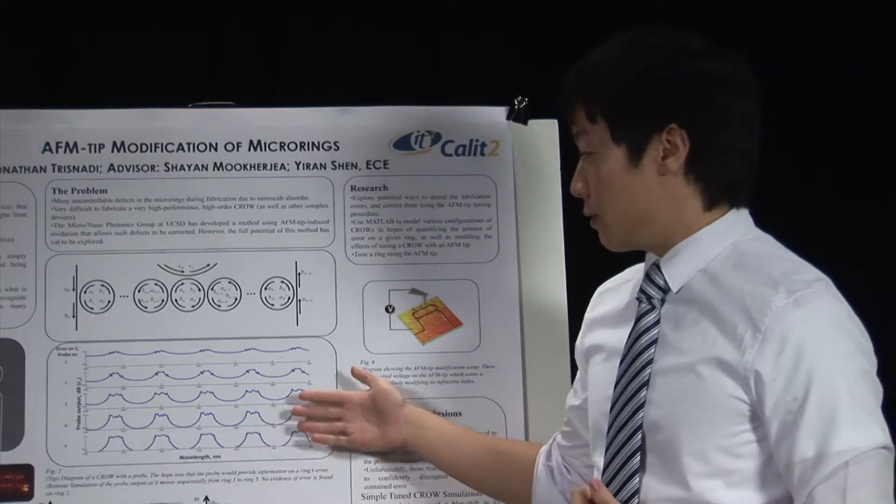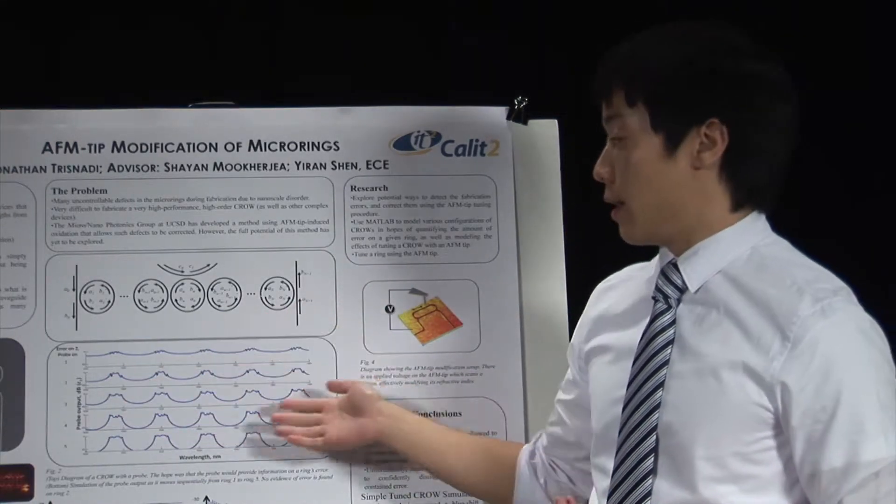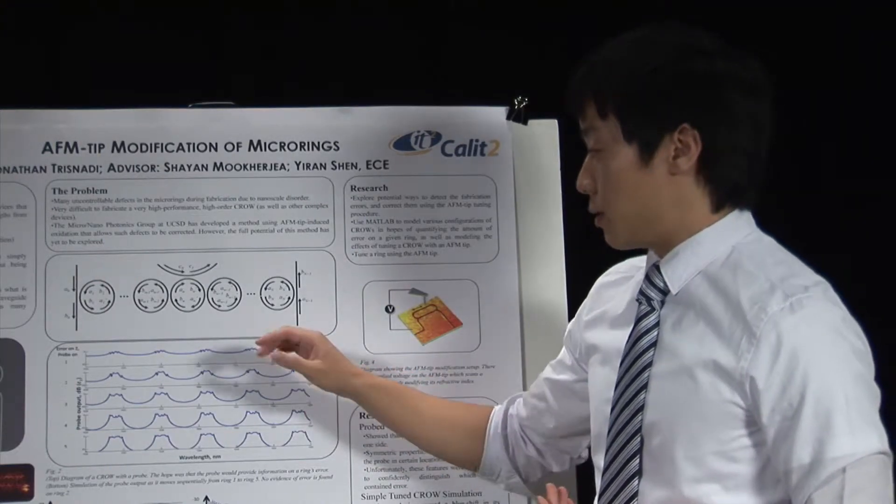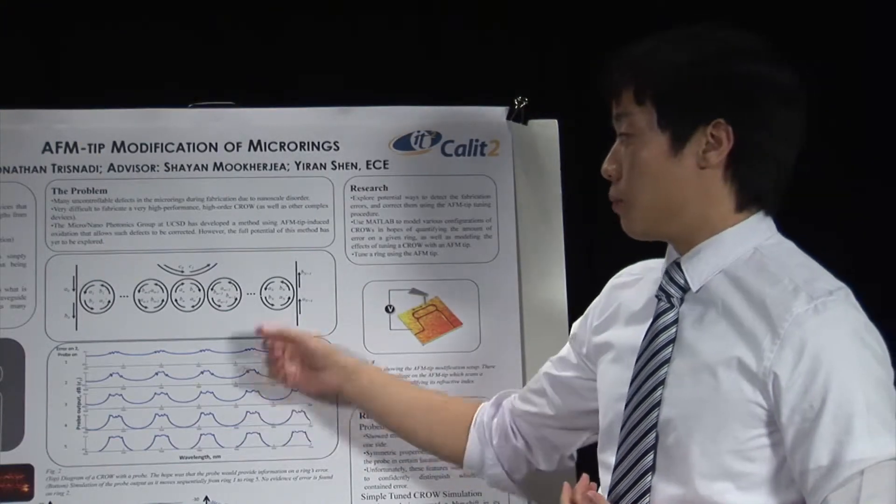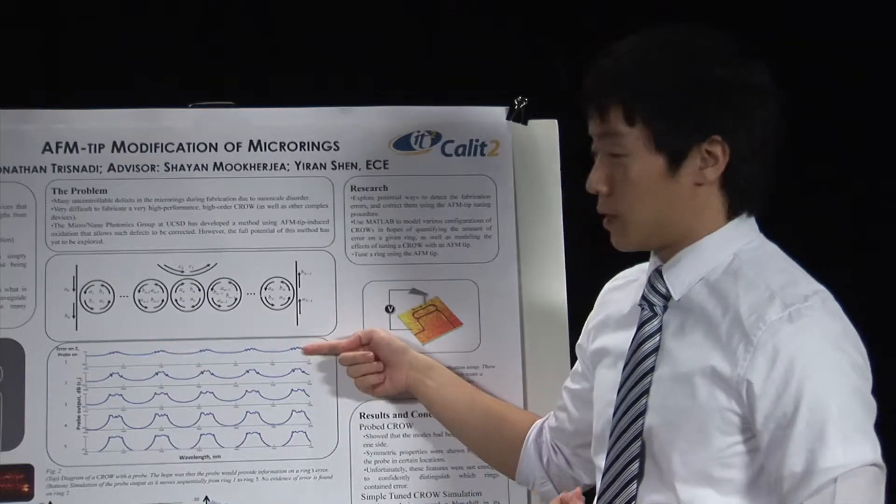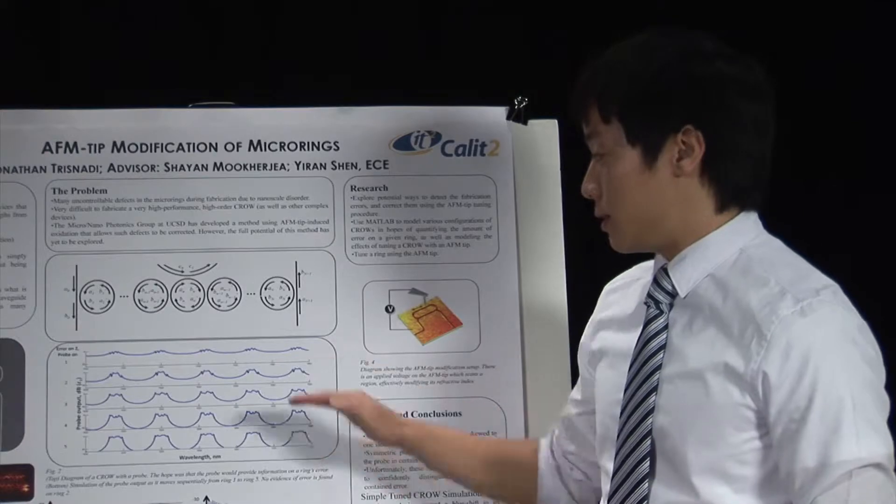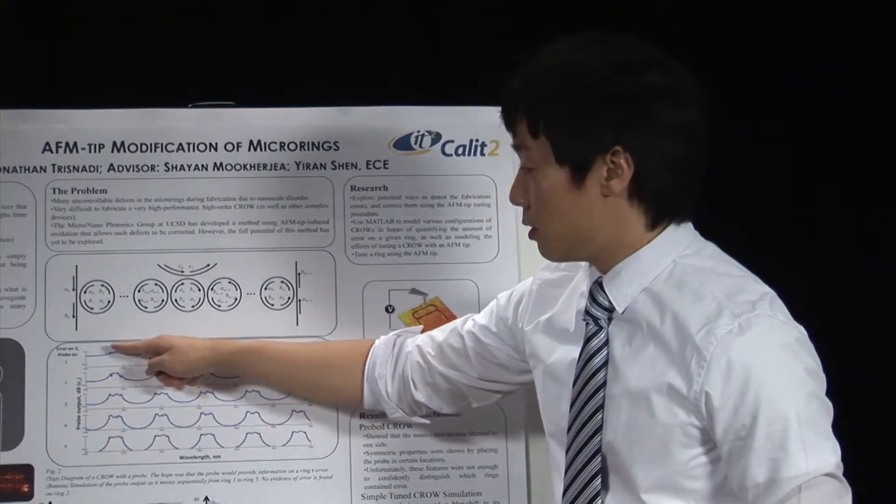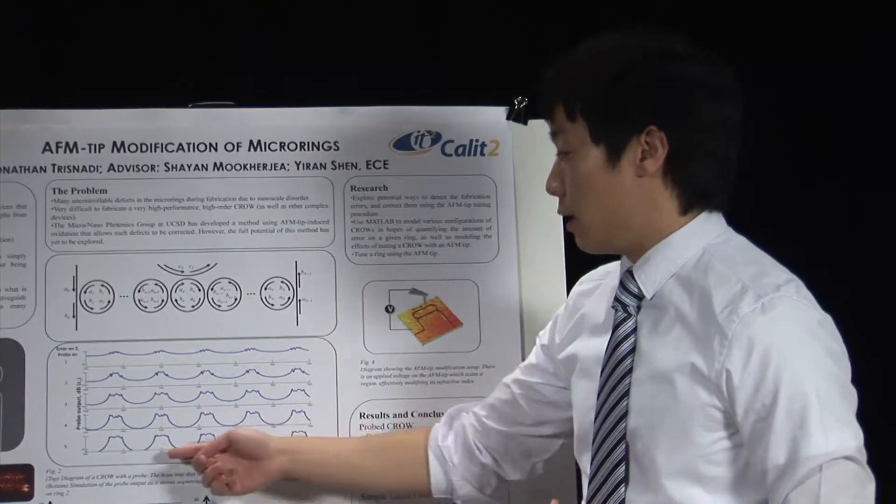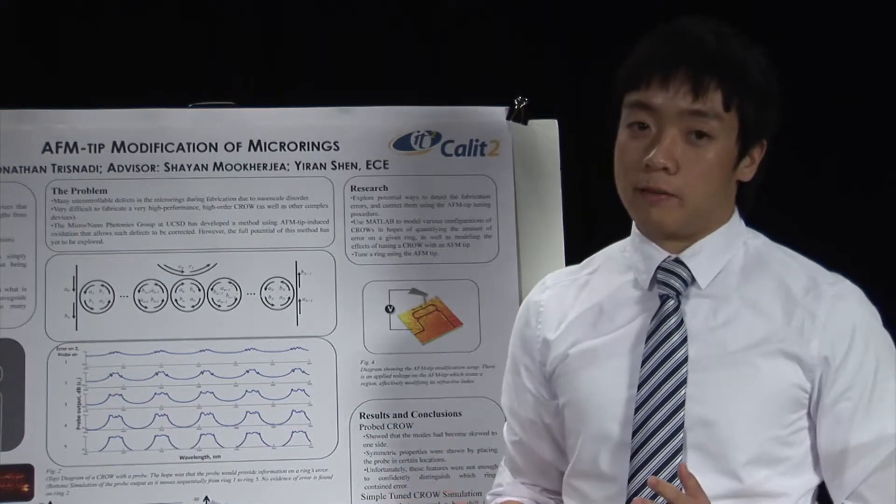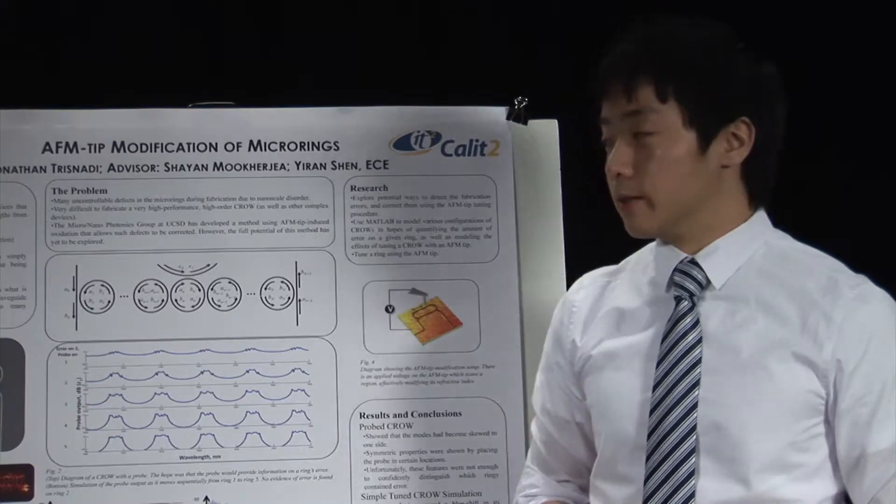And my simulation, this is a typical result of the simulation. So this is a five ring CROW and the probe is touching - here the probe is touching ring one, ring two, ring three, ring four, ring five. And we see the output of the probe, which is measured in decibels. And the x-axis is wavelength of the light in nanometers. And we're looking at light which is around 1500, 1600 nanometers.